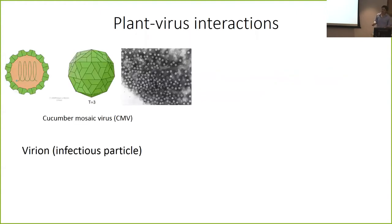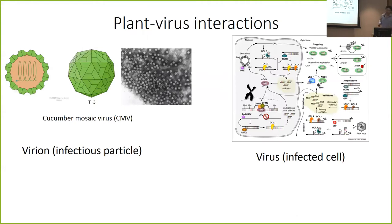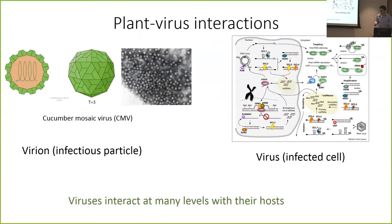So when you think about a virus, some may think about this — but this is actually a virion. A virion is an infectious particle. A virus is better thought of as an infected cell, where you have a whole complement of proteins that are not present in the virion but are required to complete the virus replication cycle. The viruses, as you know, hijack the cell metabolism. Therefore, they interact at many levels with their host.